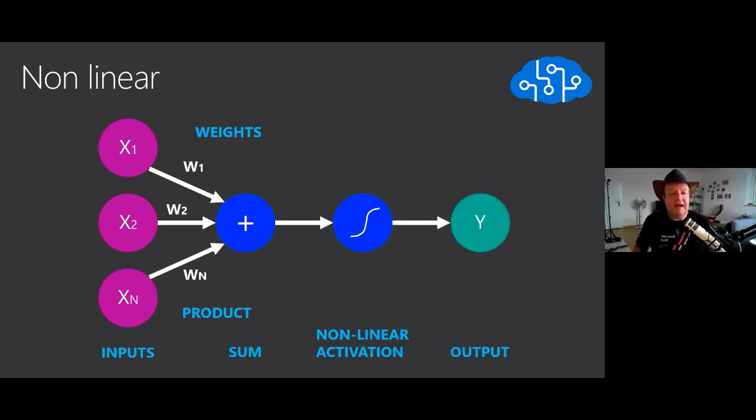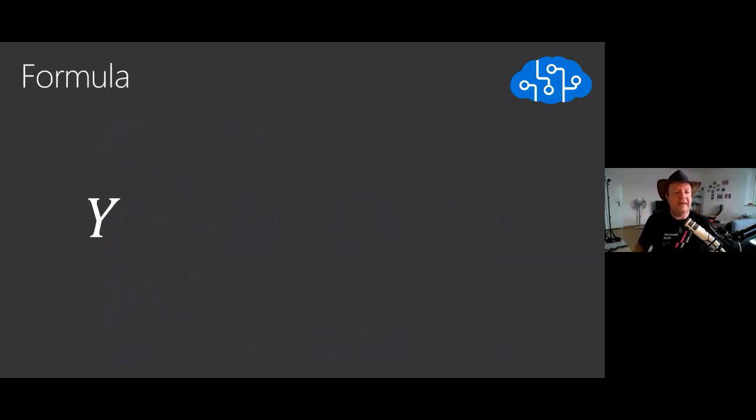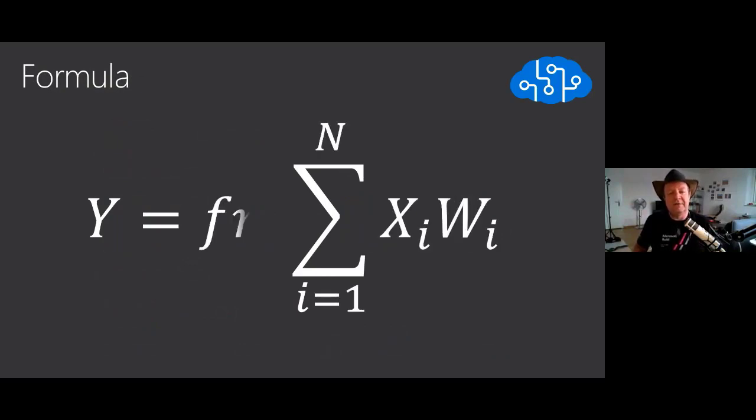If we use that in our formula from before, we have the same thing as before - the sum of products. But now we're going to have this nonlinear function through which the result is going before we put it in the output.